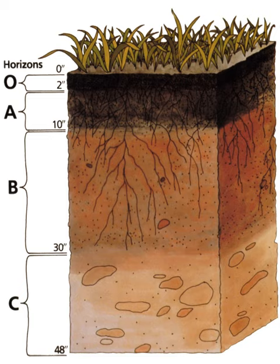The bulk density of soil depends greatly on the mineral makeup of soil and the degree of compaction. The density of quartz is around 2.65 g per cc, but the bulk density of a soil may be less than half that density.